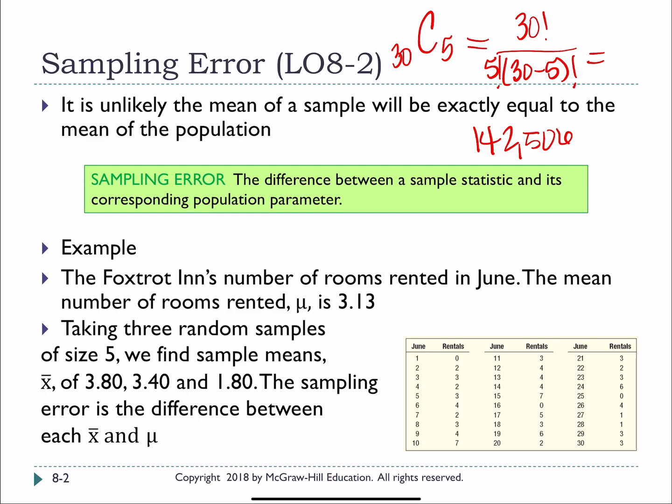And so the really cool thing though, is if we then summed up the sampling errors for all of those, the result would be zero. Because at that point we would be looking at almost the entire population. So we do know that our sample mean is an unbiased estimator of the population mean. There will be some sampling errors, but it's still a fairly good representation.